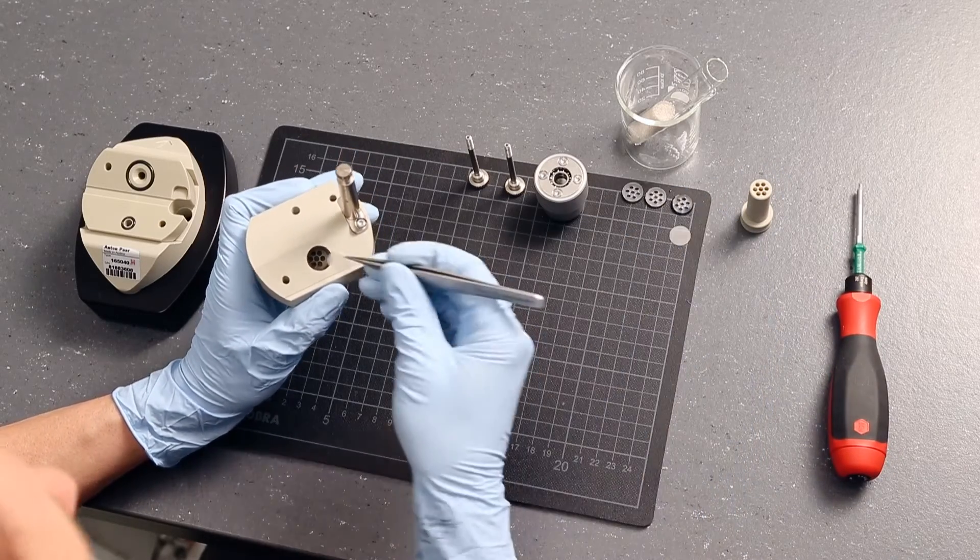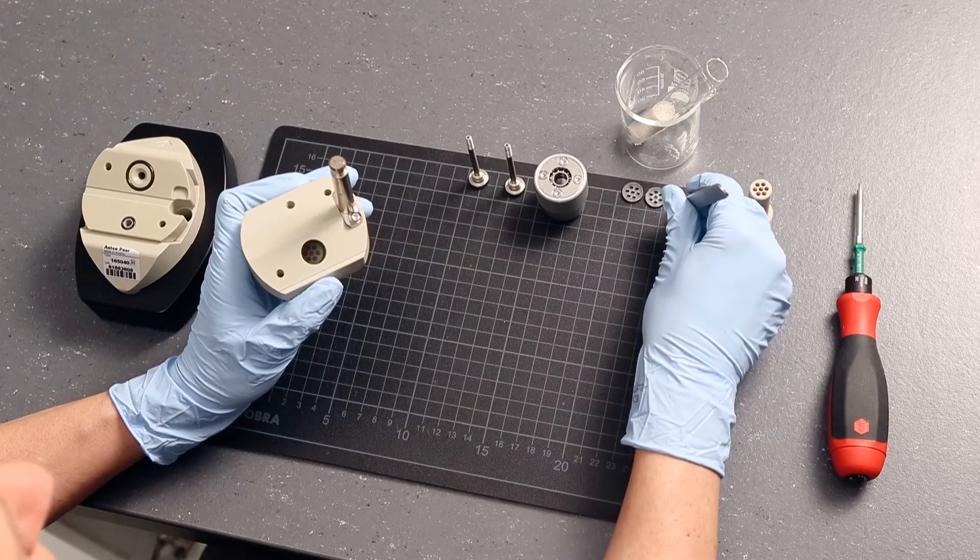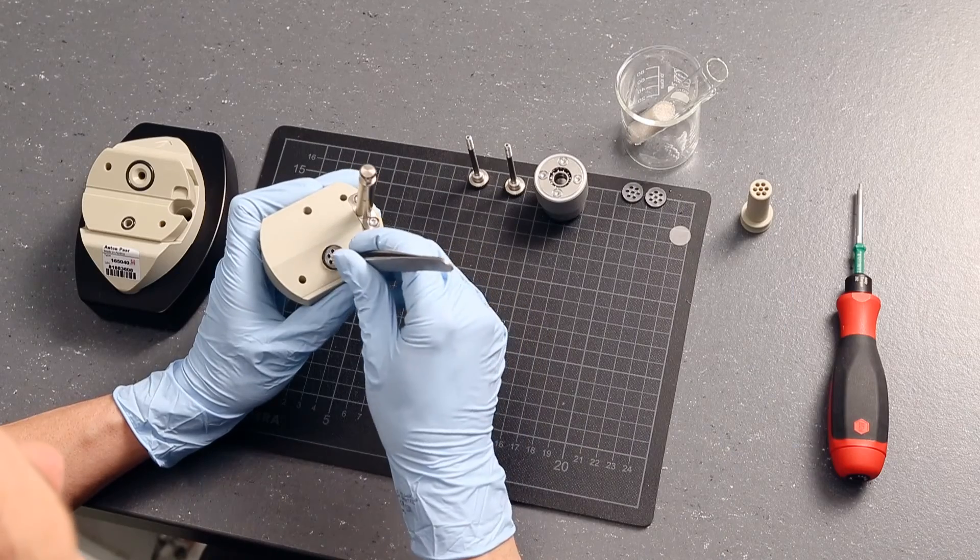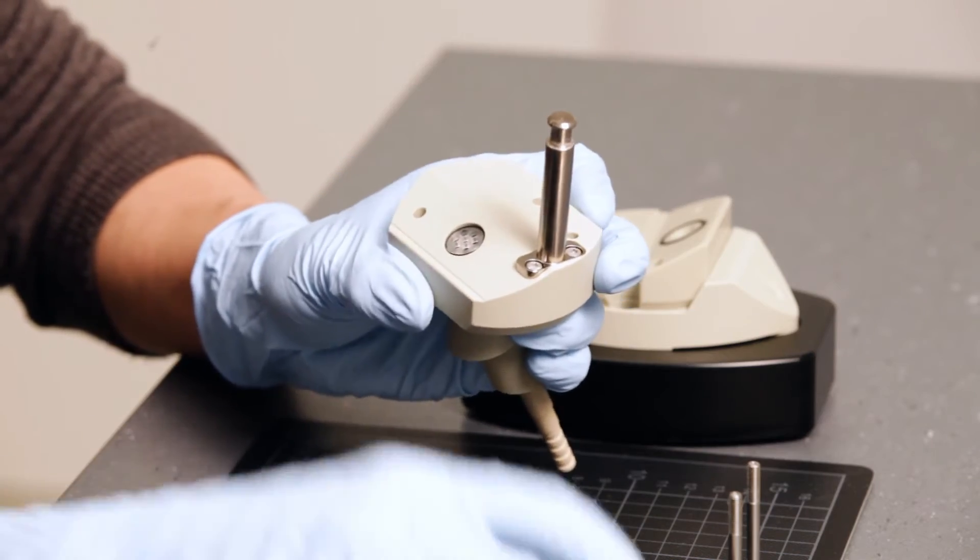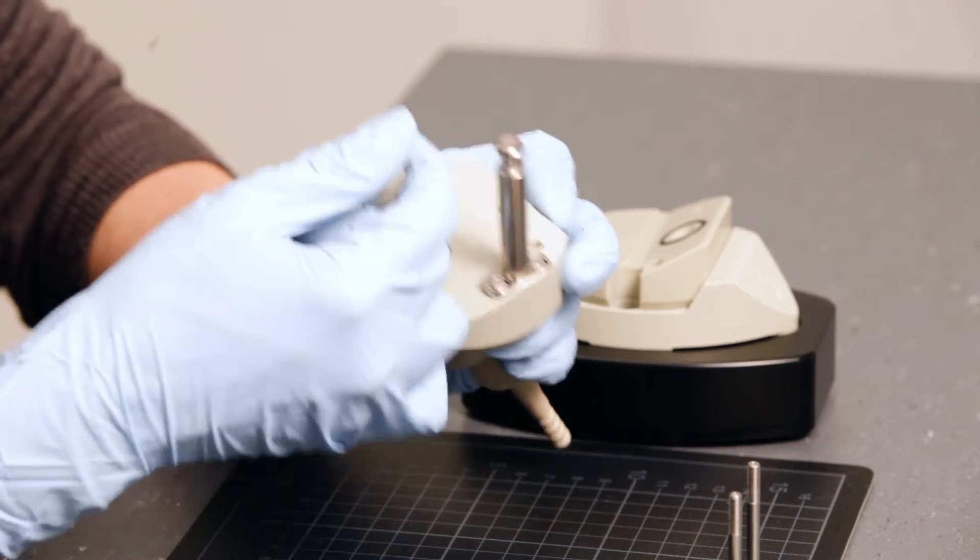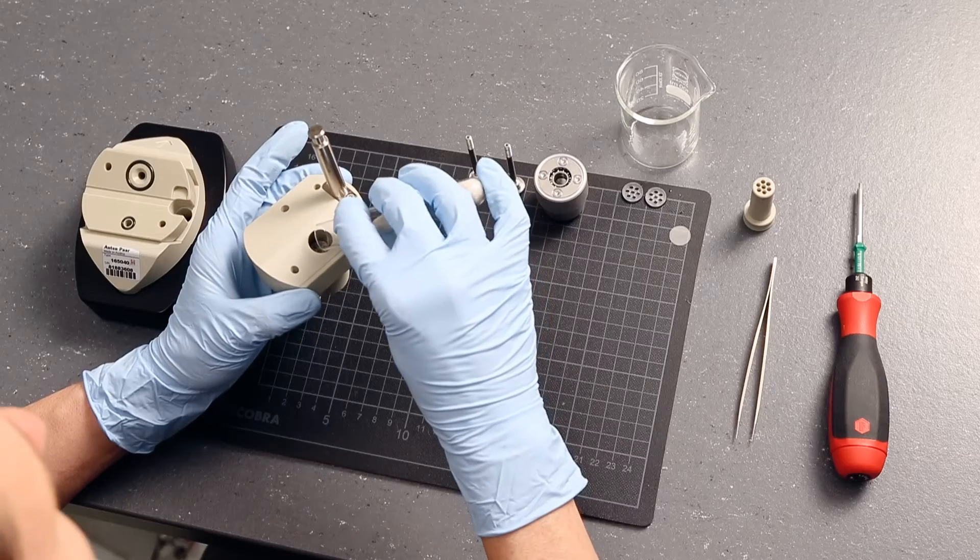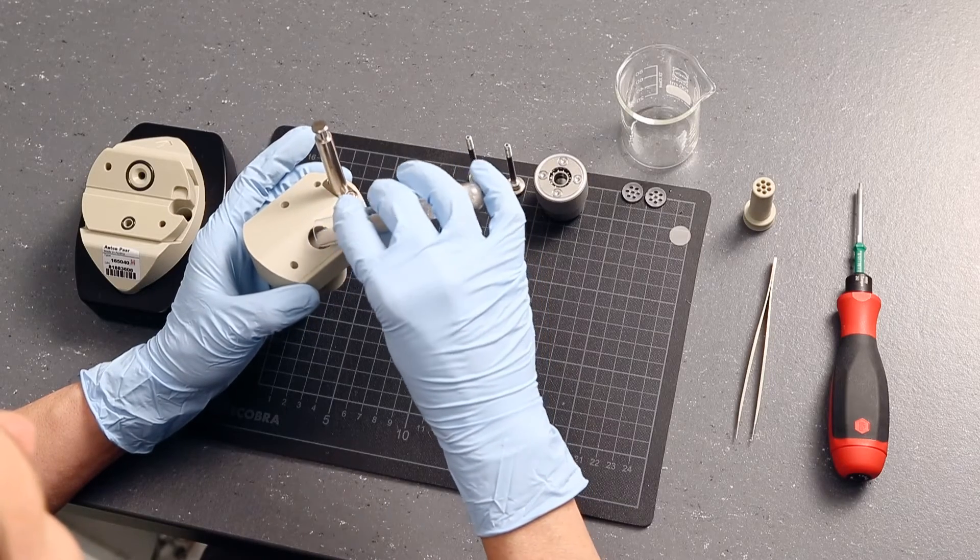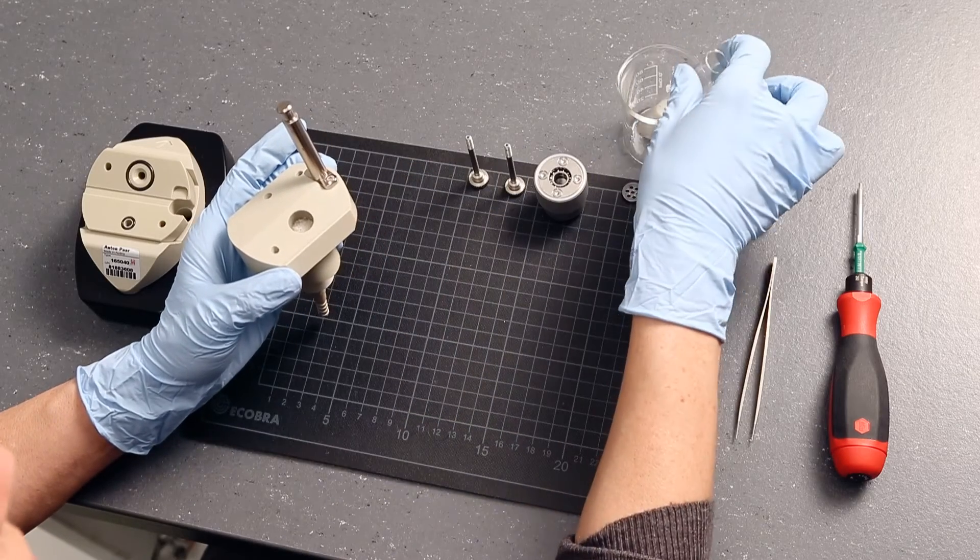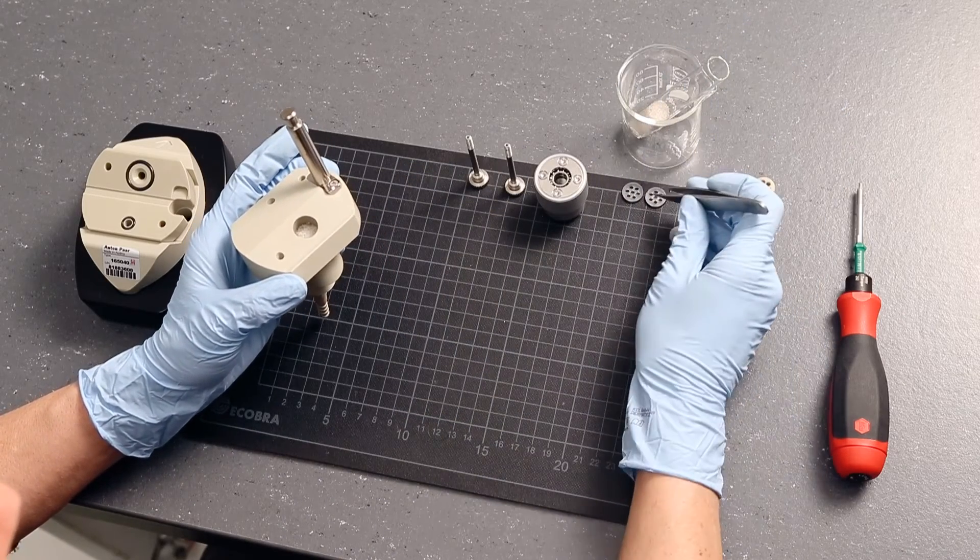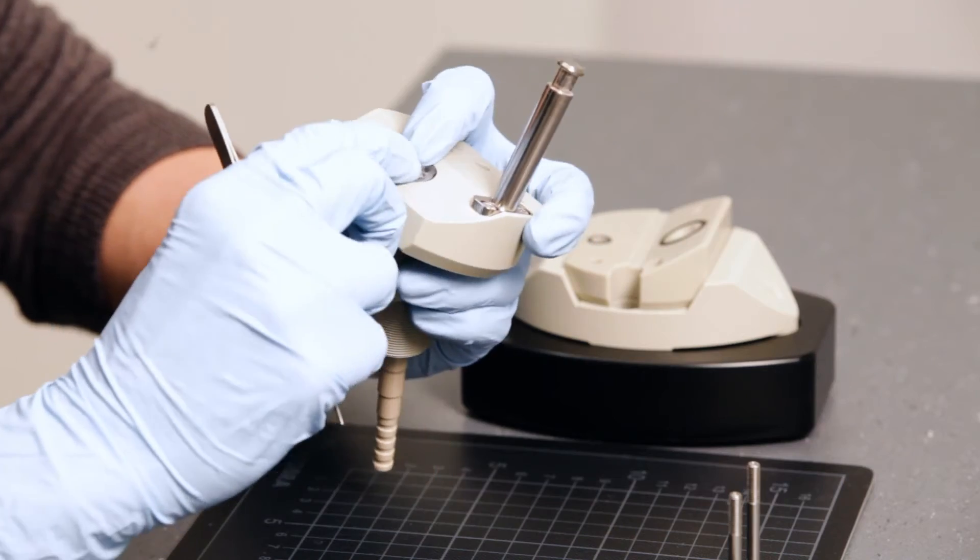Insert a filter disc and fix the filter with one of the support discs. Fill in the granular sample. Fix the sample with a stack of support discs and another filter.